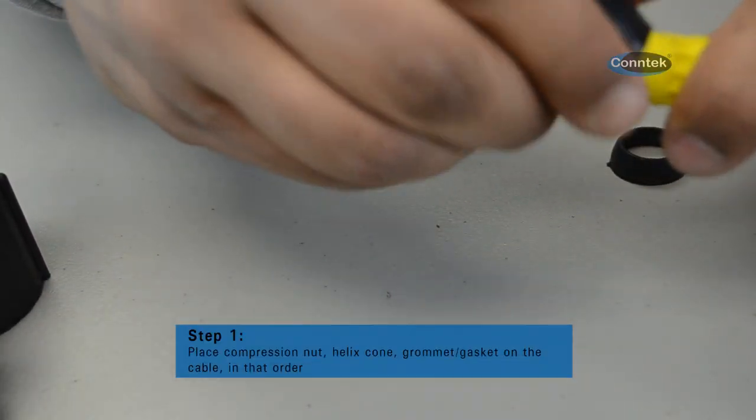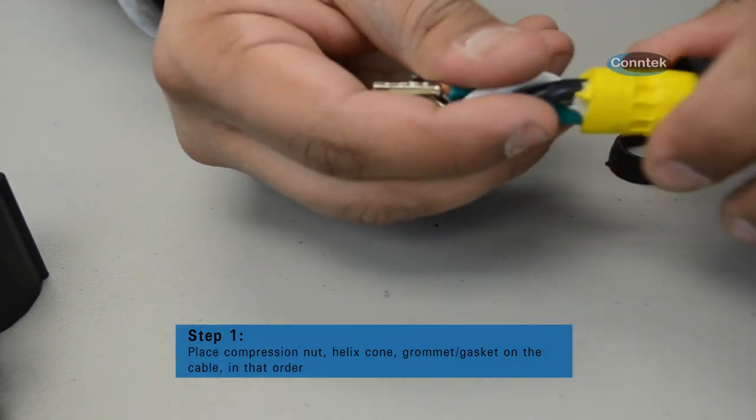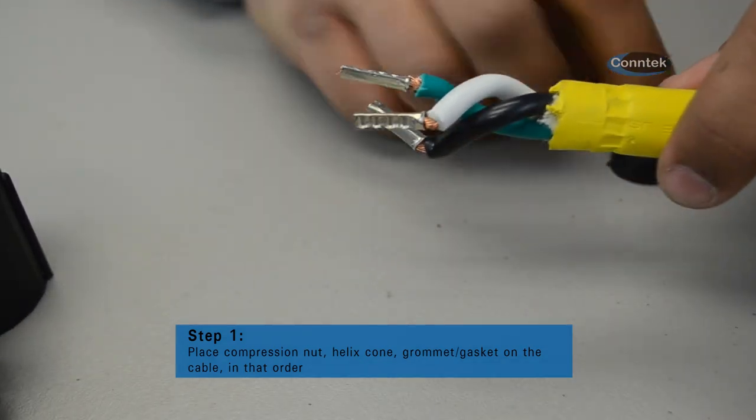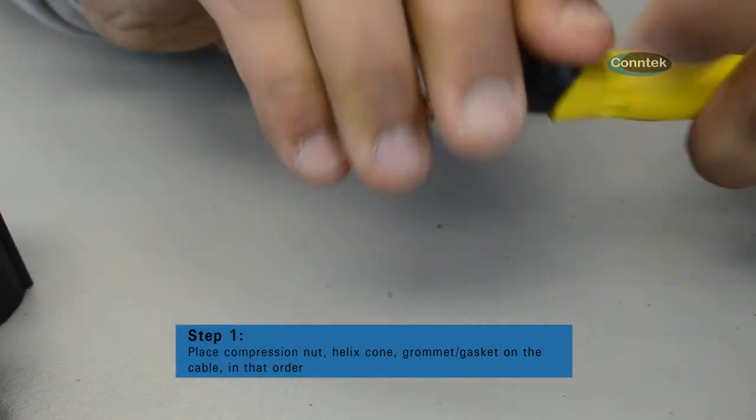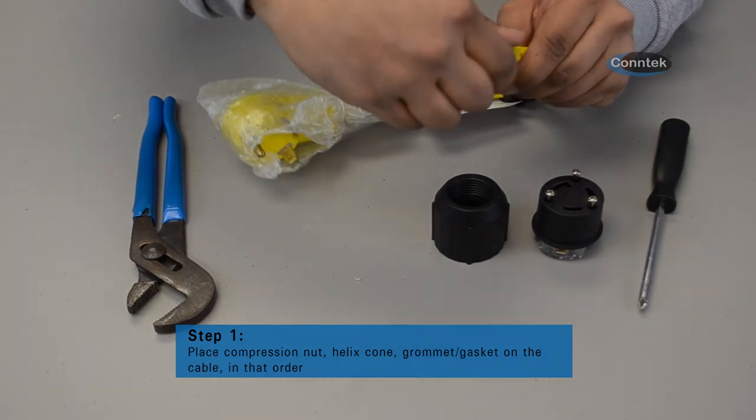For your reference this is Conteck's part number 60411. For the first step we're going to slide a compression nut, helix friction cone, and a grommet or commonly known as a gasket onto the cable.